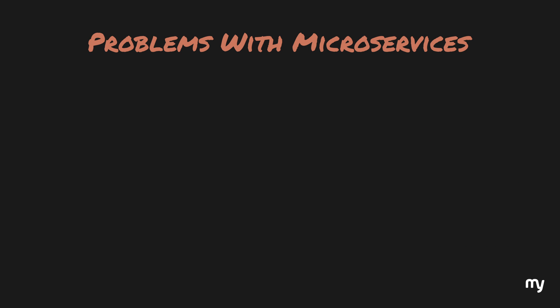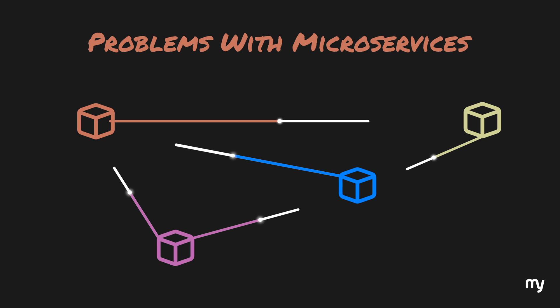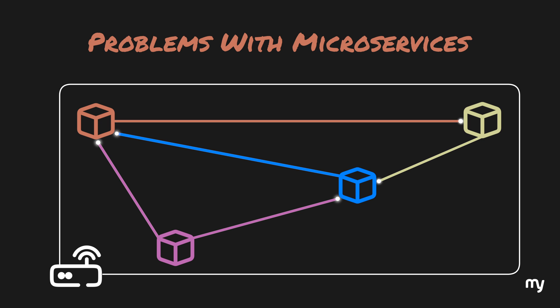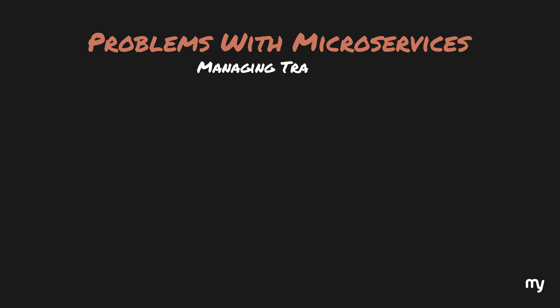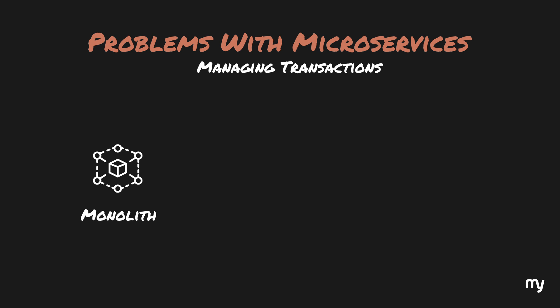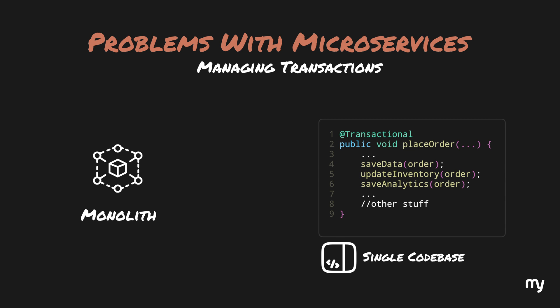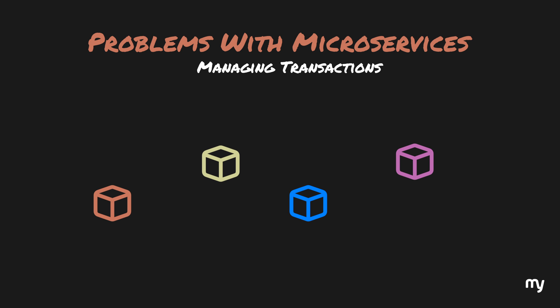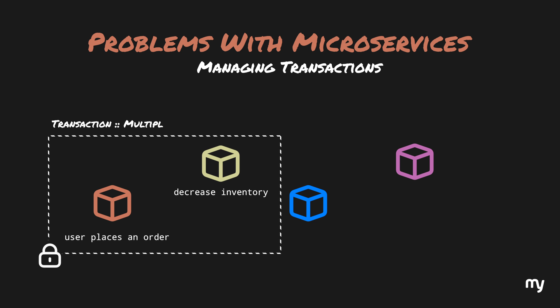Microservices solve a lot of problems that come with monoliths, but these advantages don't come without a catch. Since the services are separated and no longer tightly coupled, there is extra communication overhead. Because microservices communicate over a network, there is a problem of network latency, which can make the application relatively slower. Another pain point is that it is quite difficult to manage transactions across different services. In a monolith you could put everything in a single transaction block, but with microservices, transactions can span multiple services and must be explicitly handled — for example, when a user places an order, the inventory may need to be decremented in a completely separate service.